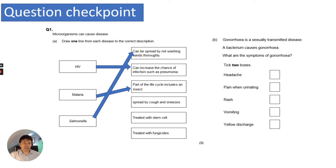Gonorrhea is a sexually transmitted disease caused by a bacterium. The question asks for the symptoms — tick two boxes. The answers are pain when urinating and yellow discharge. Be careful to tick both boxes, as many students only tick one.